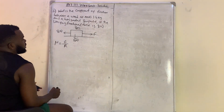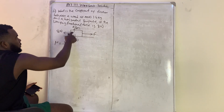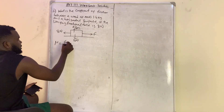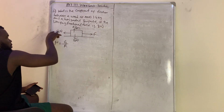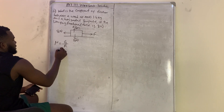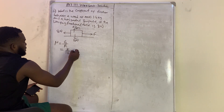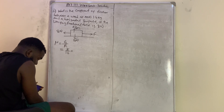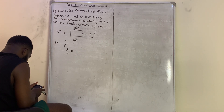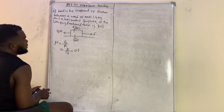The coefficient of friction (μ) equals frictional force divided by normal reaction. The normal reaction is equal to the weight of the body but in the opposite direction. So μ = 8 divided by 16, which equals 0.5. There is no SI unit for the coefficient of friction.